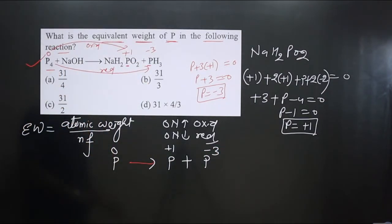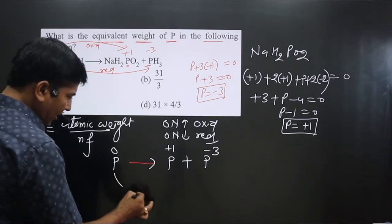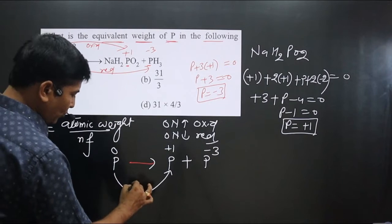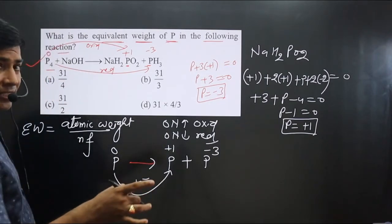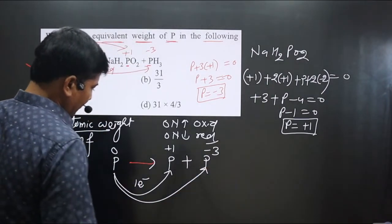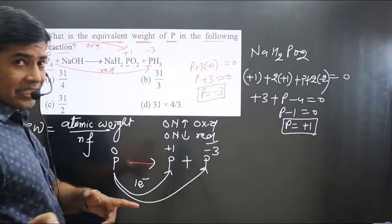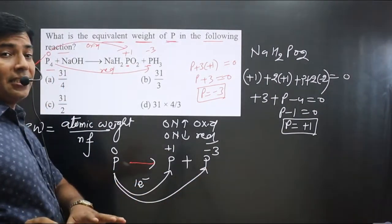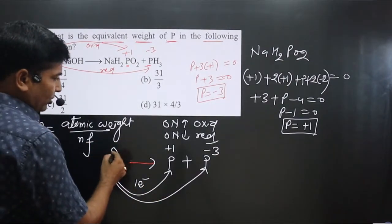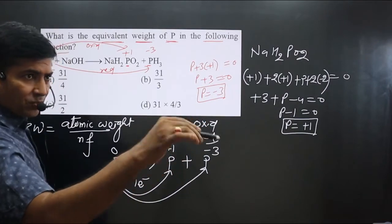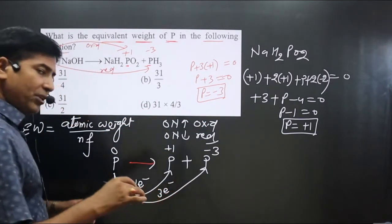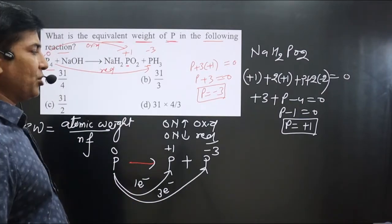From 0 to +1: the difference is 1, so 1 electron is lost — this is oxidation. From 0 to −3: the difference is 0 − (−3) = 3, so 3 electrons are gained — this is reduction.